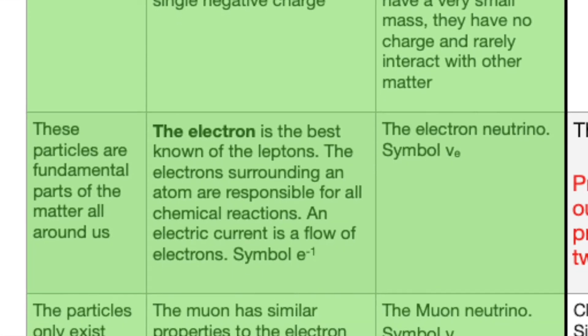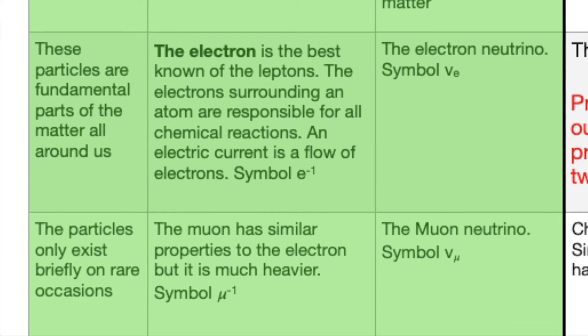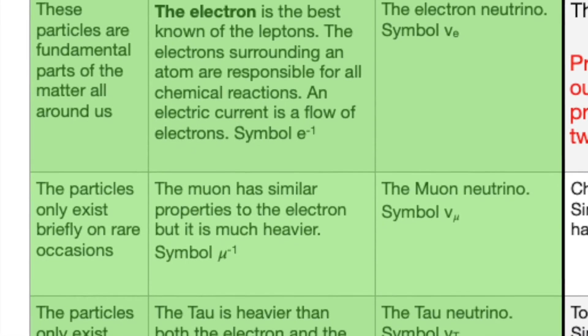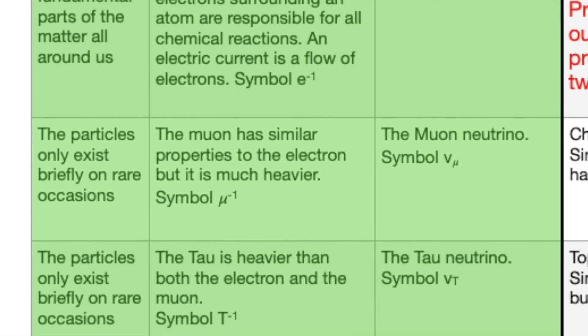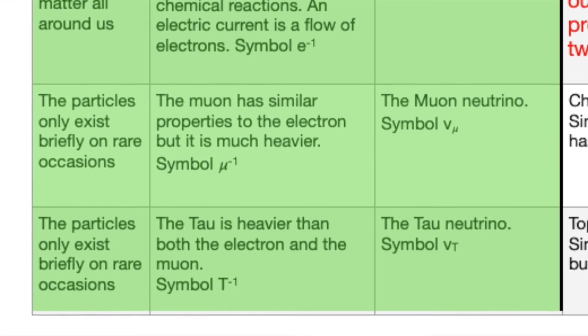The electron, the best known lepton, is responsible for chemical reactions and is generally the charge that conducts a flow of electric current. The muon and the tau with the associated neutrinos are rarely produced and have very brief lives.